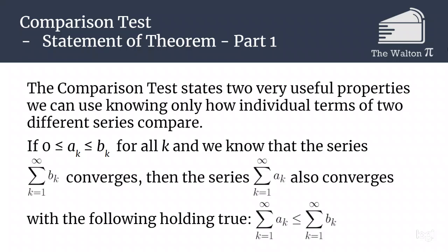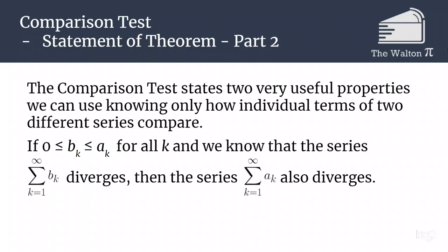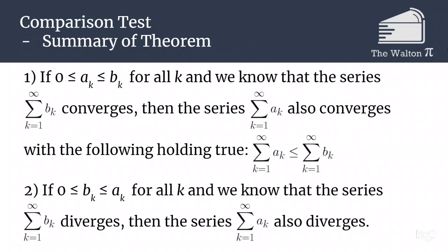We can also go the opposite direction: if b_k ≤ a_k for every k, and we know that the sum of b_k diverges, then the sum of a_k is also going to diverge. Those are the two halves of the comparison test.